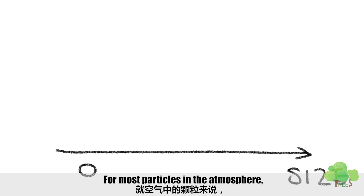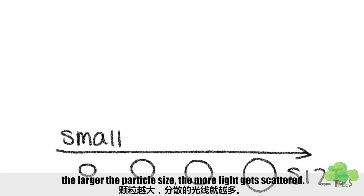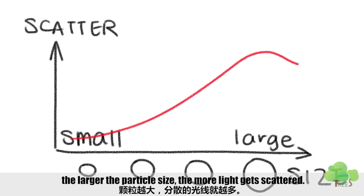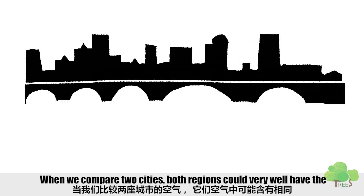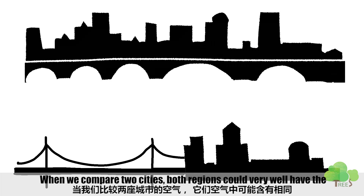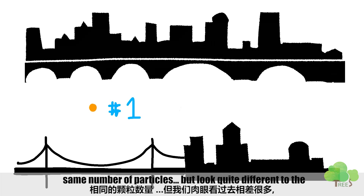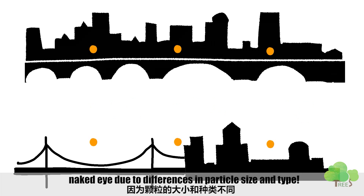For most particles in the atmosphere, the larger the particle size, the more light gets scattered. When we compare two cities, both regions could very well have the same number of particles, but look quite different to the naked eye due to differences in particle size and type.